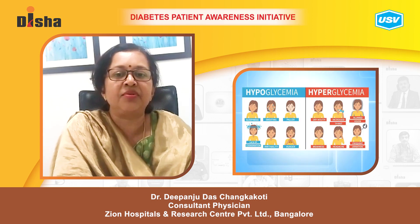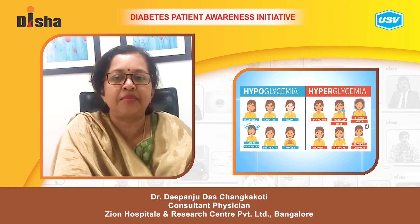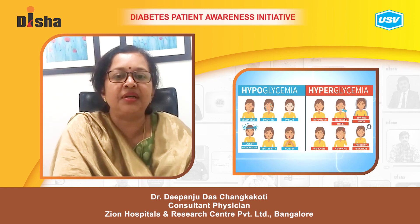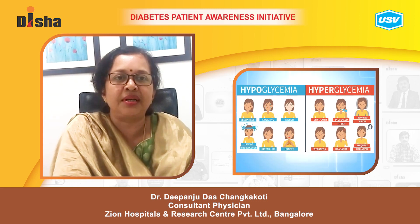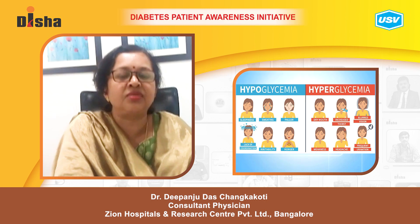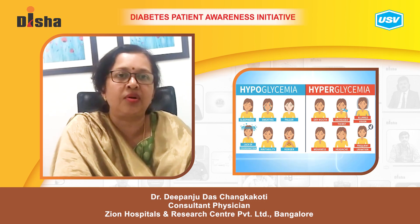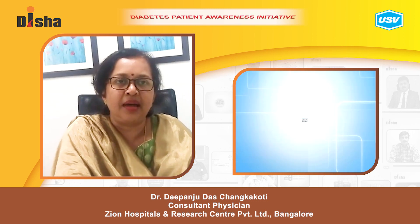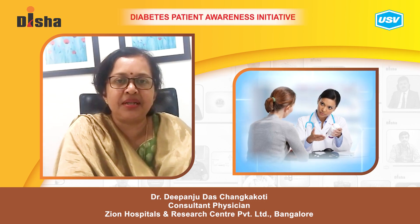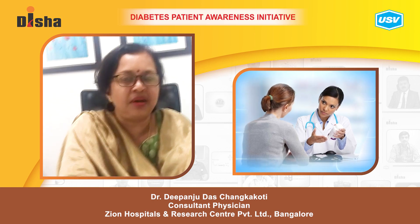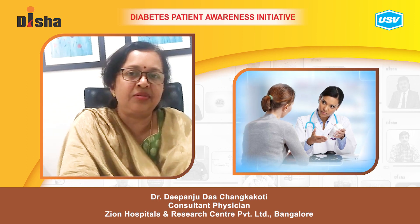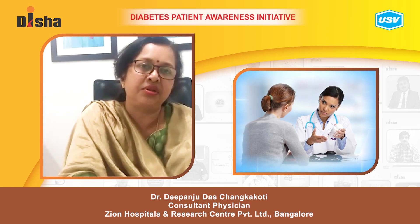Reviewing the signs and symptoms of hypoglycemia versus hyperglycemia helps remove the challenge of determining if a person's blood sugar is too low or too high. For a diabetic emergency, treatment has to be given very fast, otherwise it can lead to life-threatening consequences.